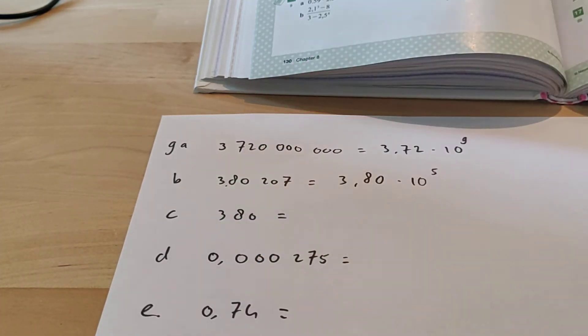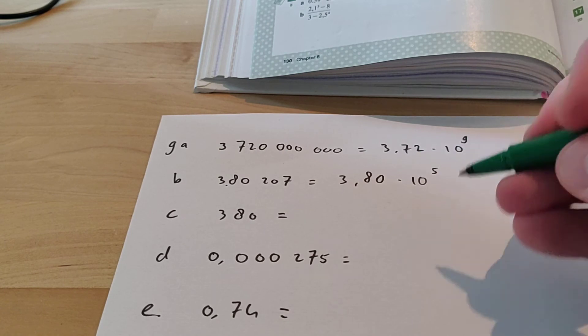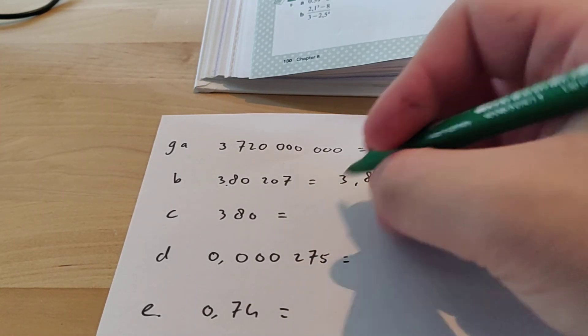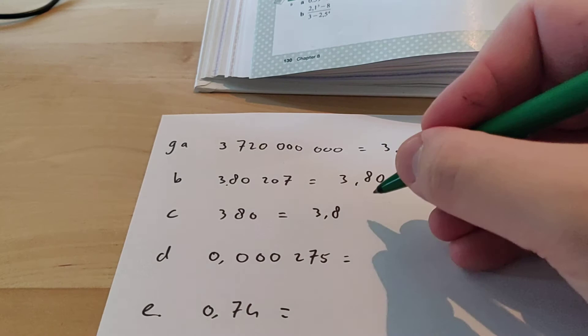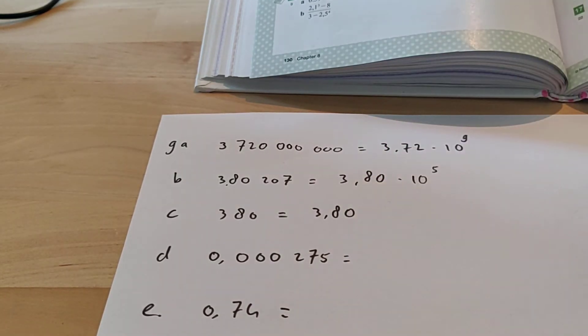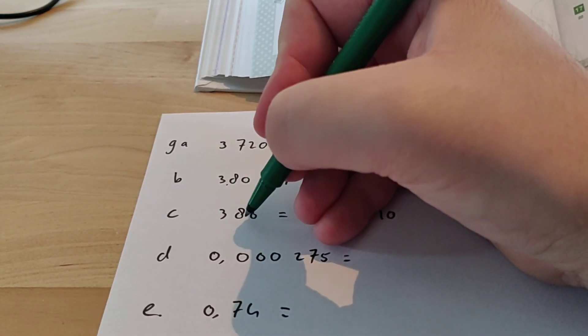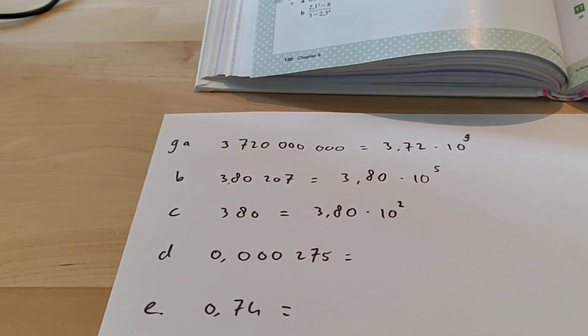The next one. This is a small number, so using the scientific notation is not very useful here. But still, the question said write down in scientific notation, so we're going to do that. So 3.80. Yes, the 0 you don't have to write down because it doesn't really do anything. Times 10 to the power of, and then 1, 2. So this is the scientific notation for that one.